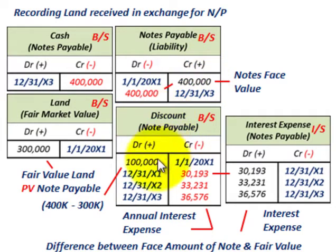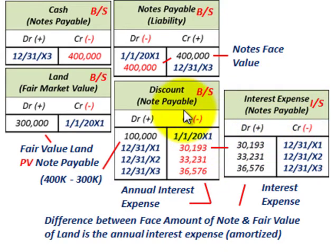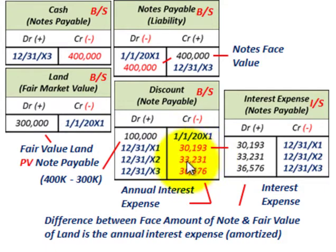The discount on notes payable is amortized using our amortization table. At the end of year X1, we credit (reduce) the discount on notes payable by $30,193 and debit interest expense for $30,193. We repeat this process at the end of years X2 and X3, taking the amounts directly from the amortization table to credit the discount and debit interest expense each period.